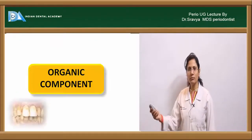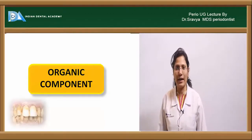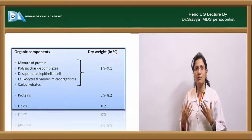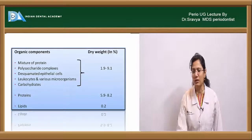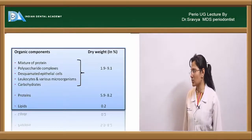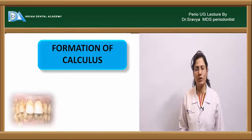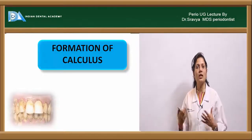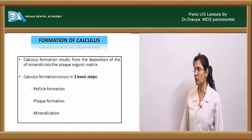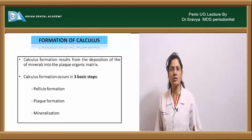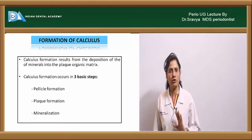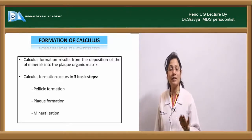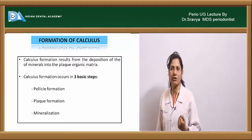The organic content includes polysaccharides, lipids, proteins, desquamated epithelial cells, leukocytes, and various microorganisms. Regarding calculus formation steps: first, pellicle forms; then plaque forms over it; and then the plaque slowly gets mineralized, becoming calculus.